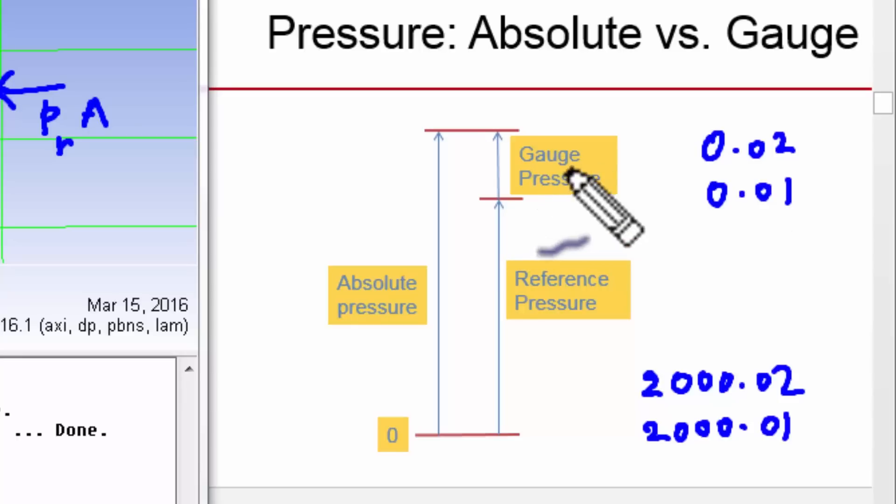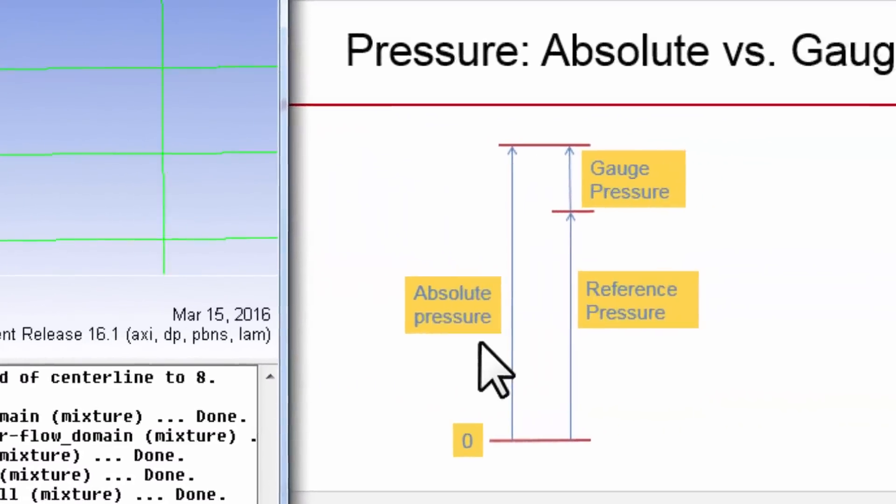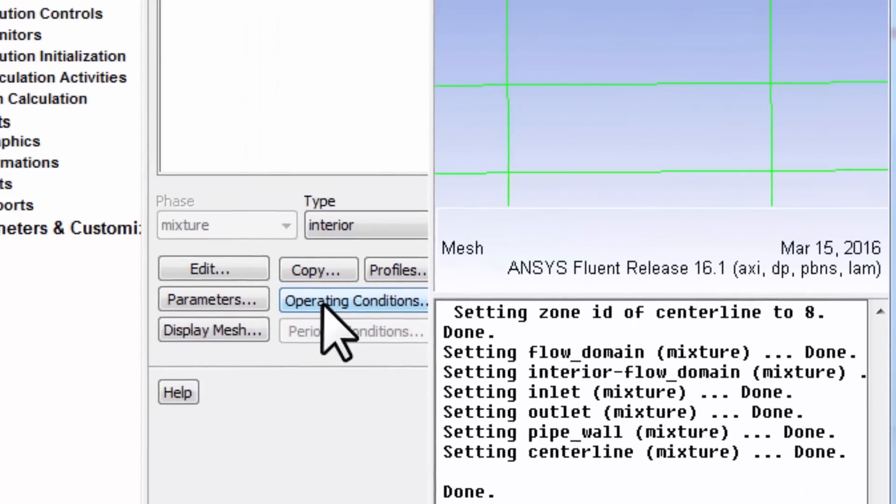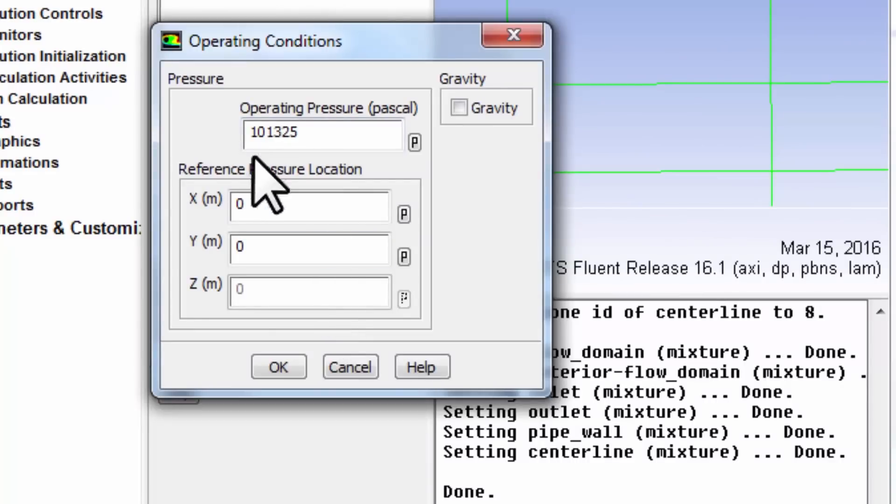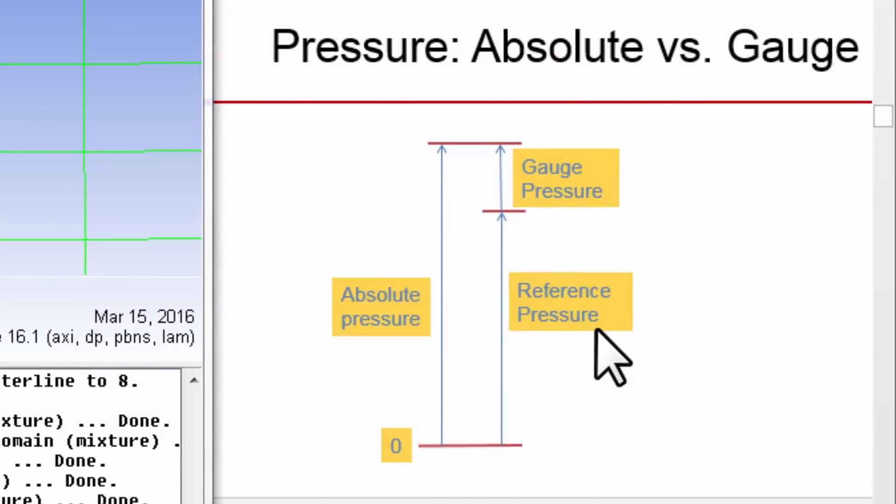So you see how working in terms of the gauge pressure is advantageous. And if I go back here, the place where you set the reference pressure is under operating conditions, and the default is one atmosphere. So the operating pressure is basically that reference pressure.